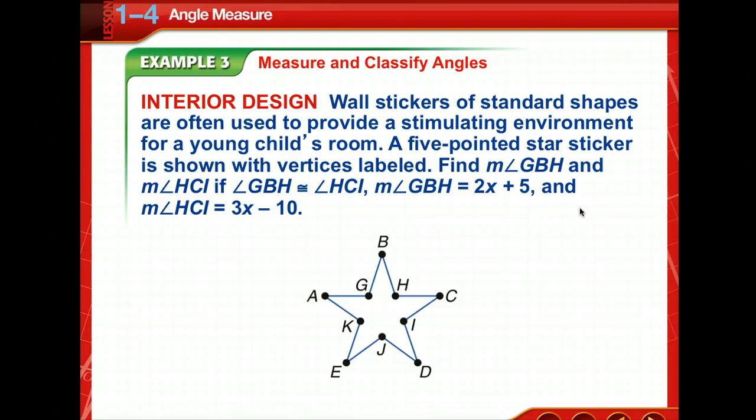Oh, so now we get to have a little challenge. This is our last example we're going to work with. We're told that standard shapes are often used to provide a stimulating environment for a young child's room. Now, we have a five-pointed star sticker, and its vertices are labeled. So this is what we're supposed to find out. What is the measurement of angle GBH and angle HCI, if angle GBH is congruent, that's what that sign means, congruent, to angle HCI. That means they have the same measurement, okay? We're also told that the measurement of GBH is equal to 2x plus 5, and that HCI is equal to 3x minus 10. So you might want to take just a moment, write down what is being given to you in this problem, because it's fixing to vanish when I go to the next screen.